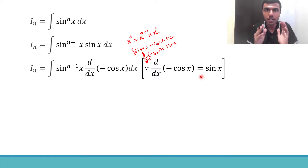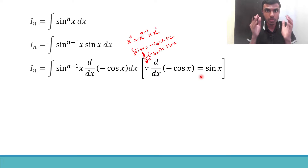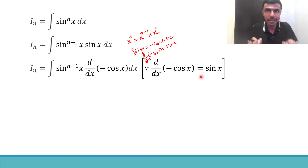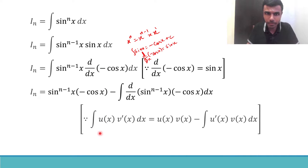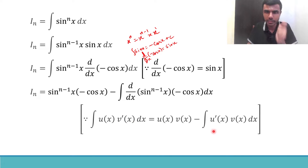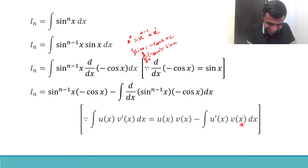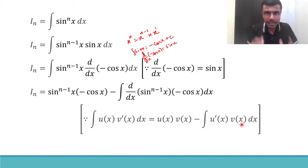In integration there is a concept known as integration by parts, and that is what I'm going to use right now. As per integration by parts: integral of u(x) · v'(x) dx equals u(x)·v(x) minus integral of u'(x)·v(x) dx. I know you may not have understood everything — I'll explain each term slowly.